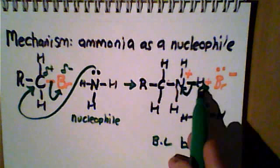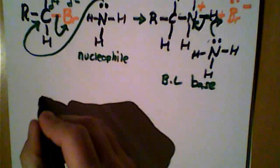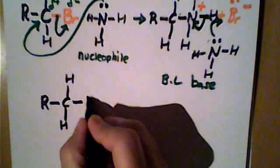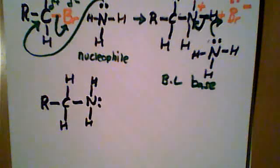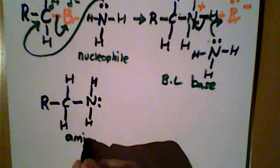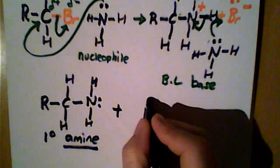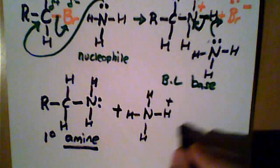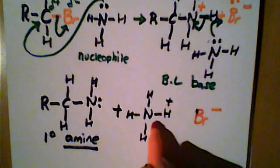So in the first step the ammonia behaved as a nucleophile, and in the second step it removed a proton and behaved as a Brønsted-Lowry base. The final species belongs to the homologous series of amines — we now have this functional group here with a lone pair, and this is a primary amine. The ammonia took an extra proton and therefore formed an ammonium ion, and the charges are cancelled out by the bromide ion. Together they form a salt: ammonium bromide.